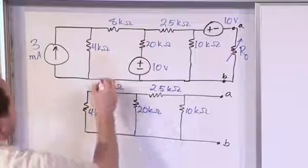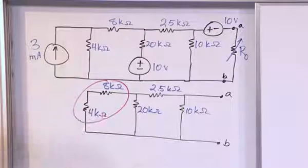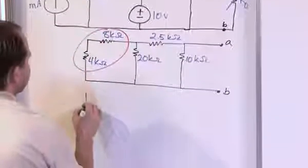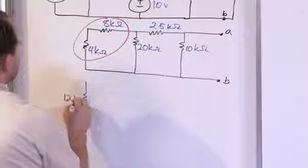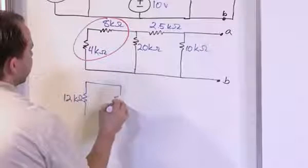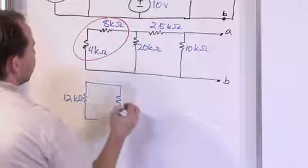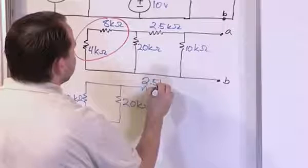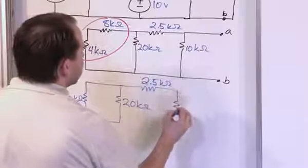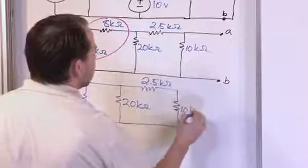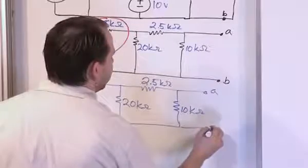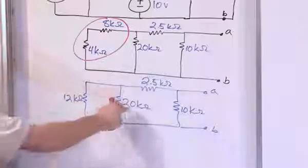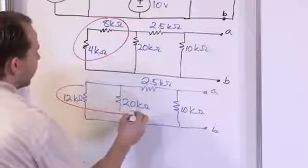Working on the back end, the 8k and 4k resistors are in series, so we just add them: 8 plus 4 equals 12 kiloohms. We redraw the circuit below, placing a 12 kiloohm resistor there, along with the 20 kiloohm, 2.5 kiloohm, and 10 kiloohm resistors. Next, the 12k and 20k resistors are in parallel.